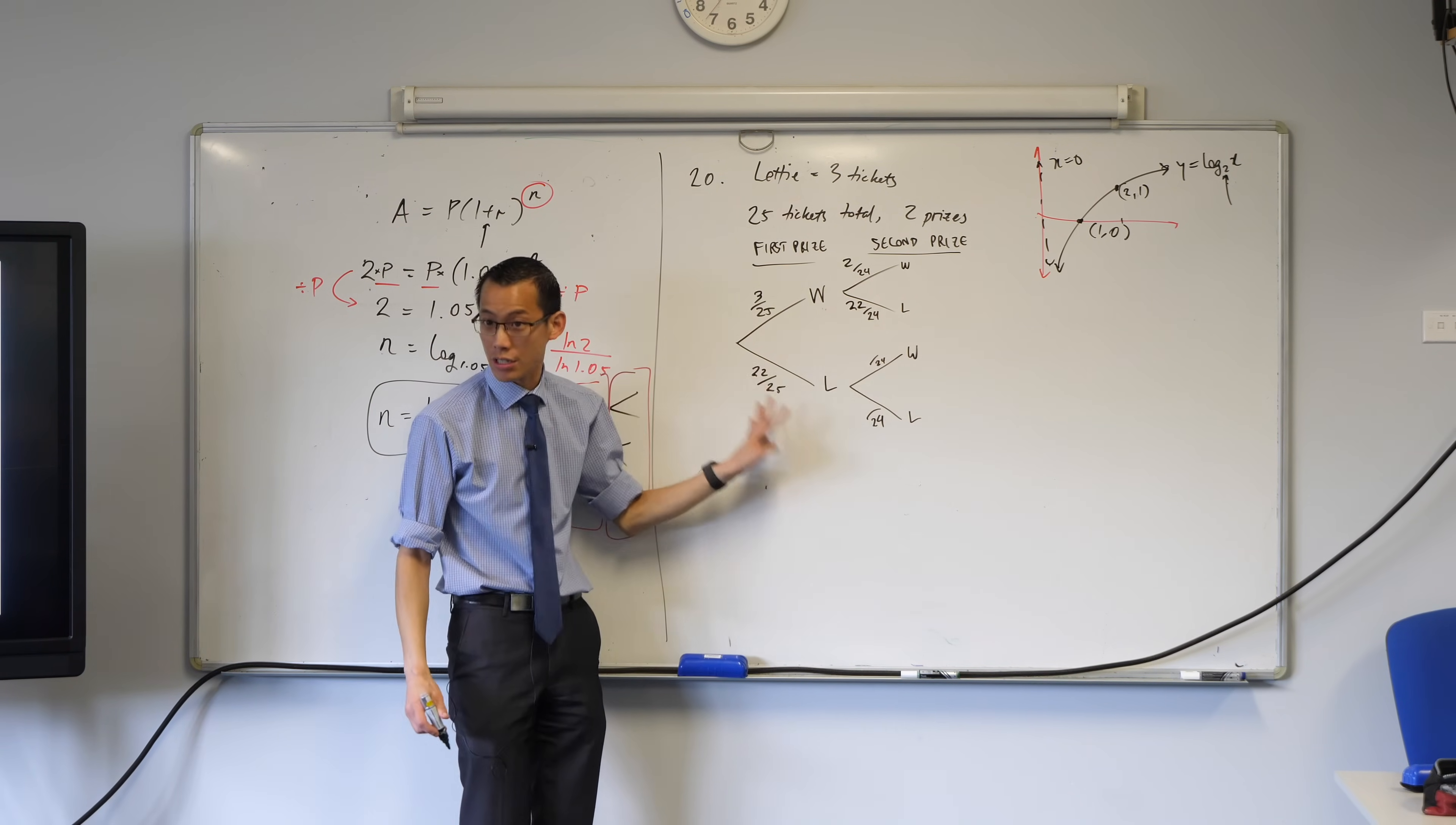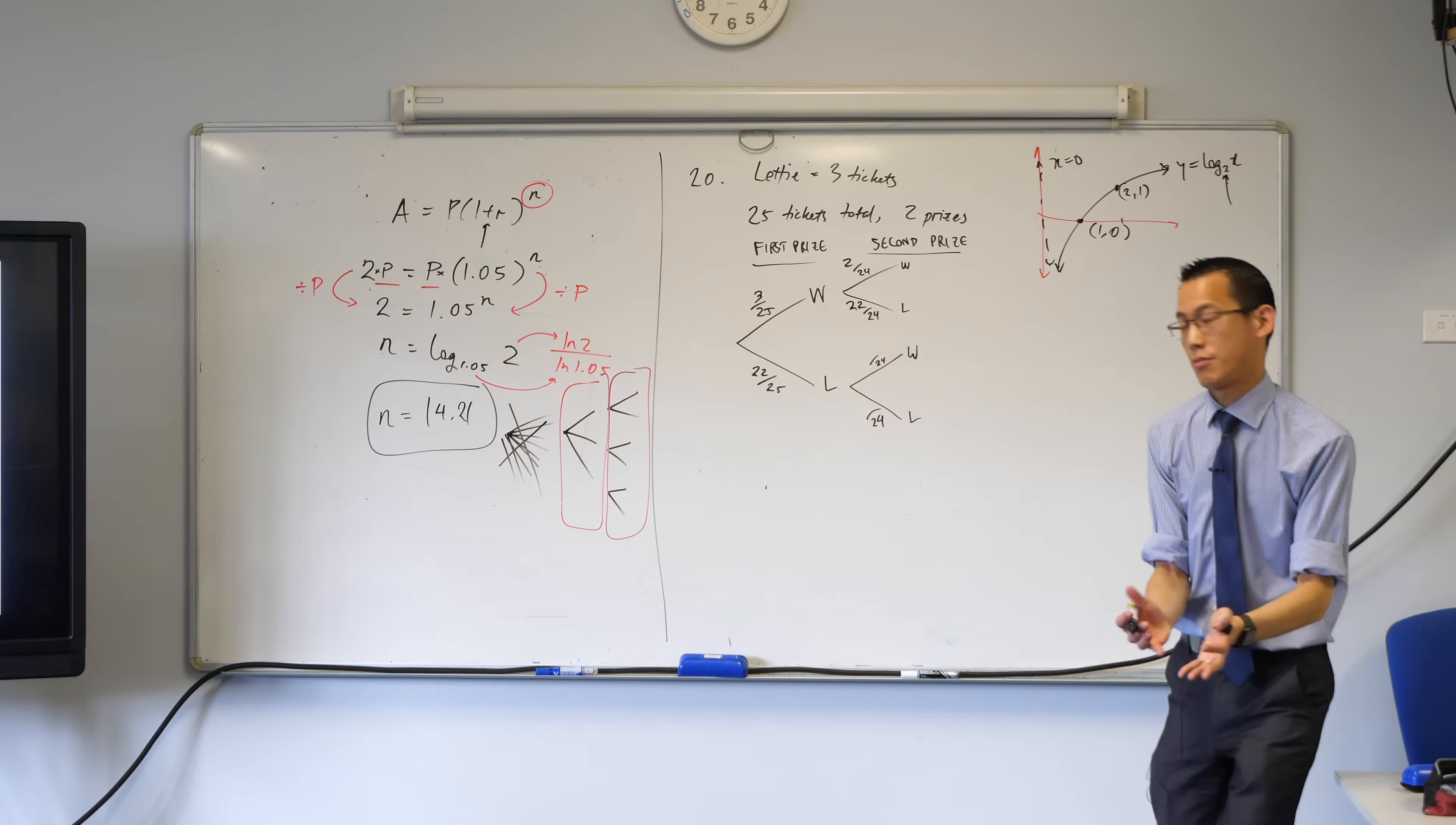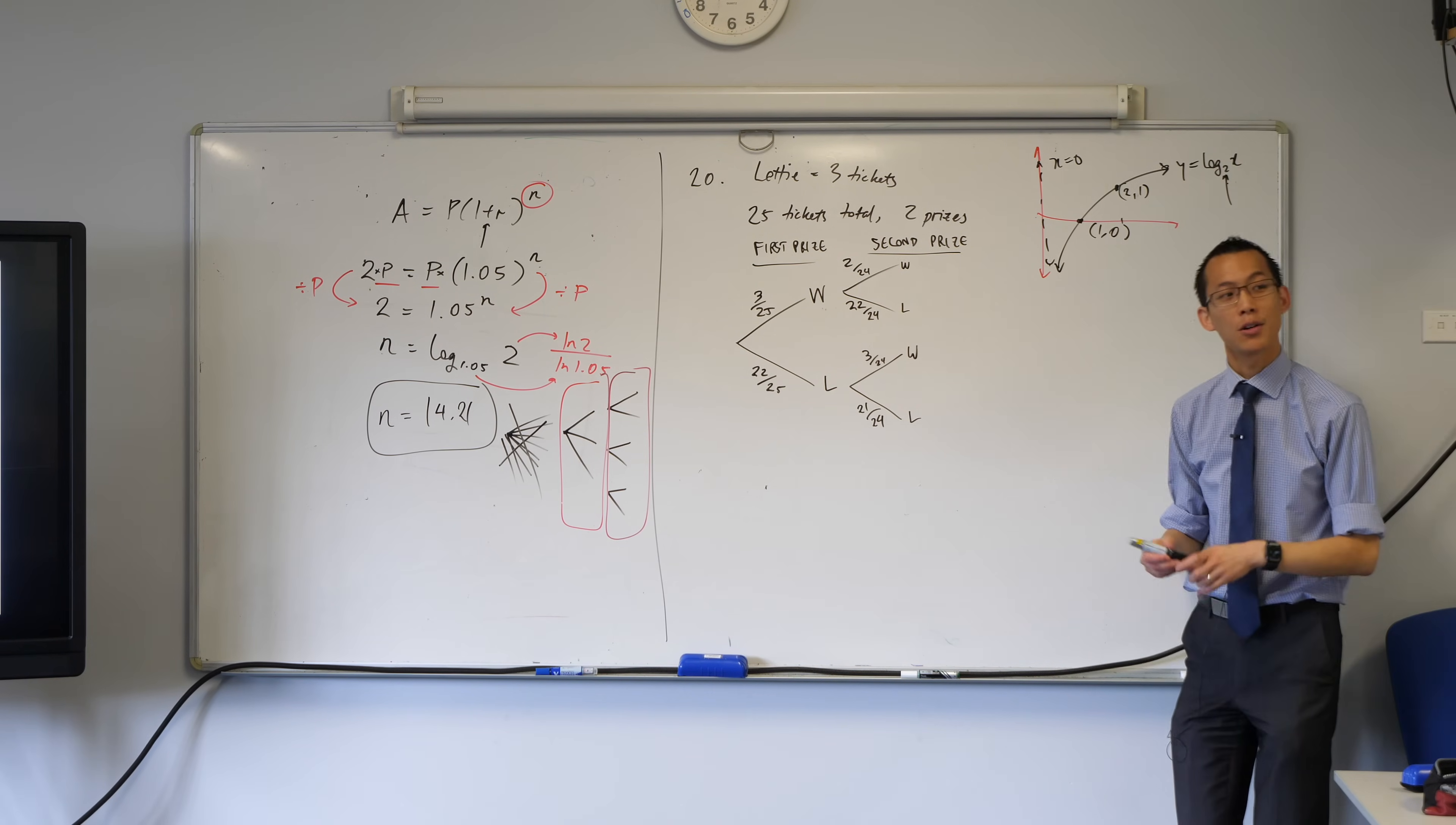So, therefore, she only has two tickets left in her hand that could still win out of the 24 that are there, right? And then, of course, you still have the complement, 22 out of 24 there, right? If she didn't win the first time, you know, some other person's number got called. She's got tickets one, two, and three in her hand. They could all still be winners, right? So, that's why her possibility there is 3 out of 24. And then, there's your complement.